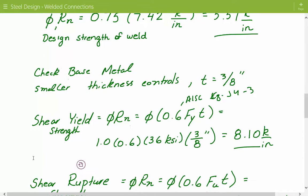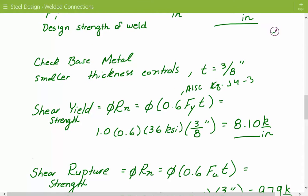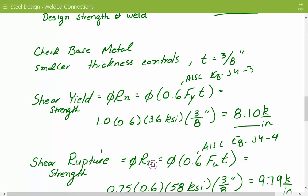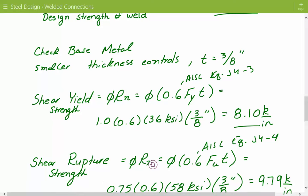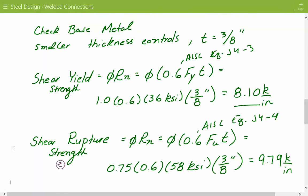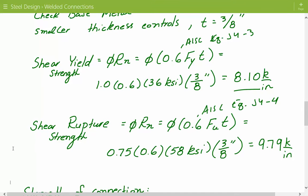Base metal shear rupture is based on AISC equation J4-4: resistance factor times 0.6 times the ultimate strength times the thickness. Since it's A36 material, the yield is 36 KSI and ultimate strength is 58 KSI. So: 0.75 times 0.6 times 58 KSI times three-eighths inch equals 9.79 kips per inch.